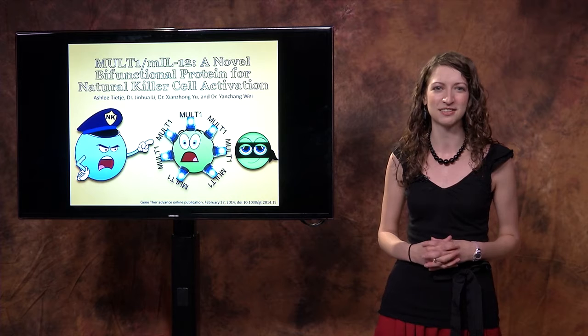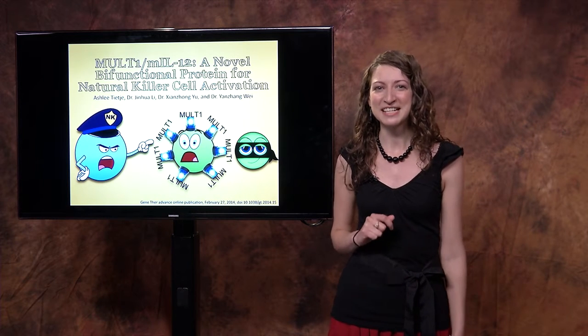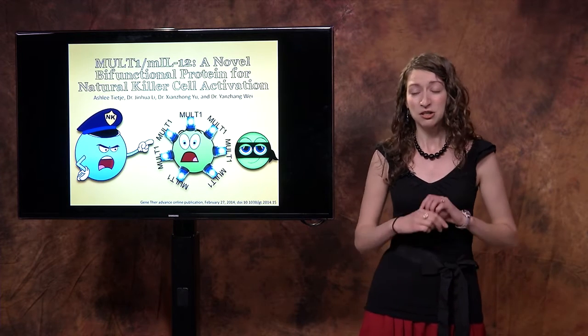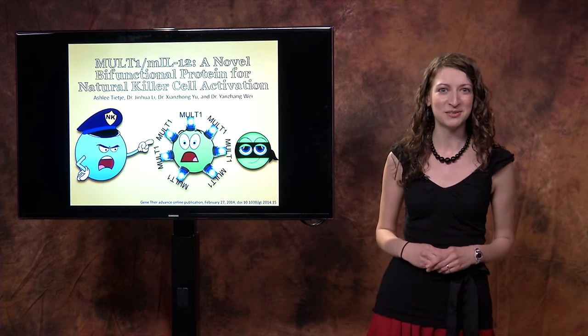So you may ask yourself, why do we still have cancer if there are all these natural killer cells around? Well, cancer cells are smart. Many advanced cancers have found ways to get rid of MULT1 from their surface. They trip the alarm system, put on a disguise, and evade the immune system.